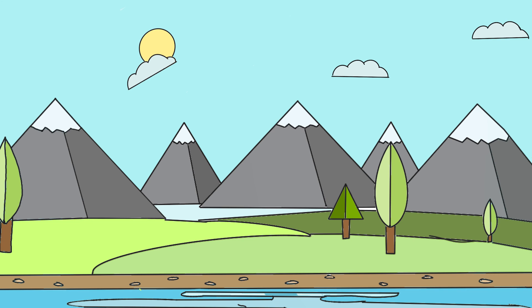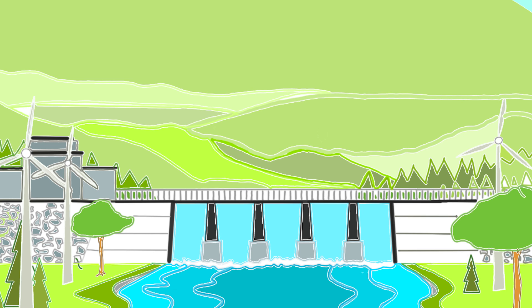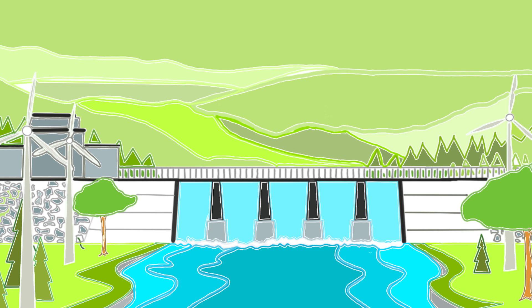So where does your water come from? Mountains? Rivers? Reservoirs? What even is a reservoir? Reservoirs are key players in ensuring a constant water supply. A reservoir is a human-made lake formed by the construction of a dam. But why do we need dams in the first place?